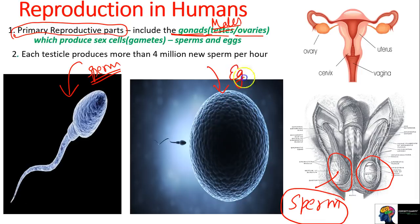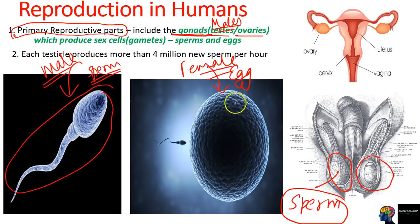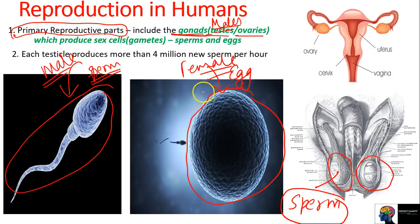This egg photo - this is the egg, which is the female sex cell. When the male sex cell (sperm) and the female sex cell (egg) undergo fusion, a zygote is formed. The zygote develops into a human baby.